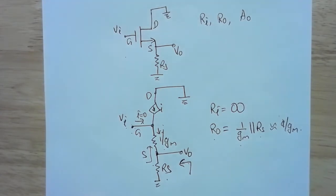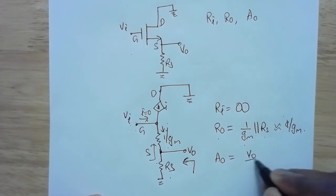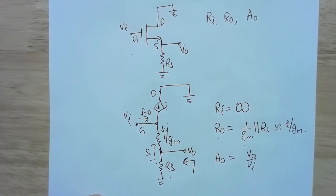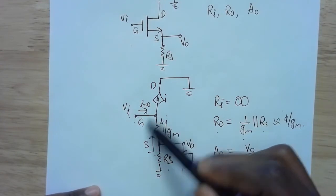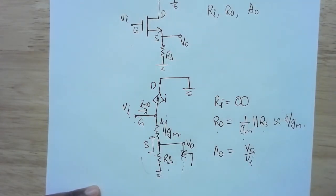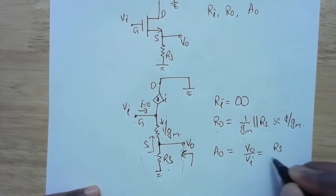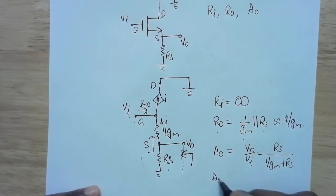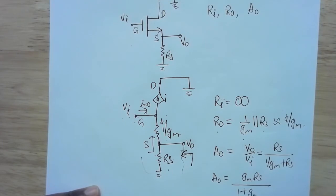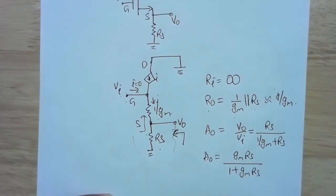The open circuit voltage gain AO equals VO over VI. It's open circuit because no load resistance is connected. Observing the circuit, 1/gm and RS are in series, so VO over VI is a simple voltage divider: VO equals VI times RS divided by (1/gm + RS). Simplifying, AO equals gm·RS divided by (1 + gm·RS).